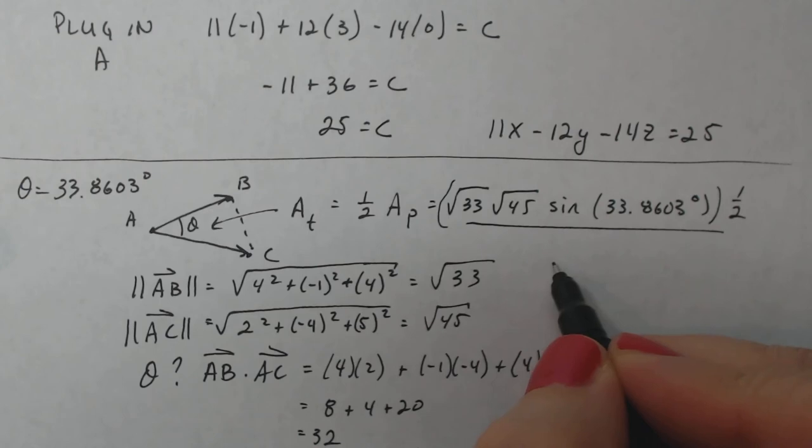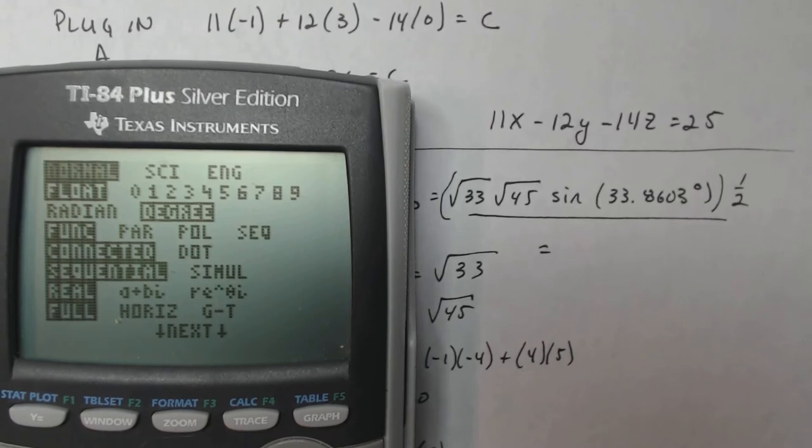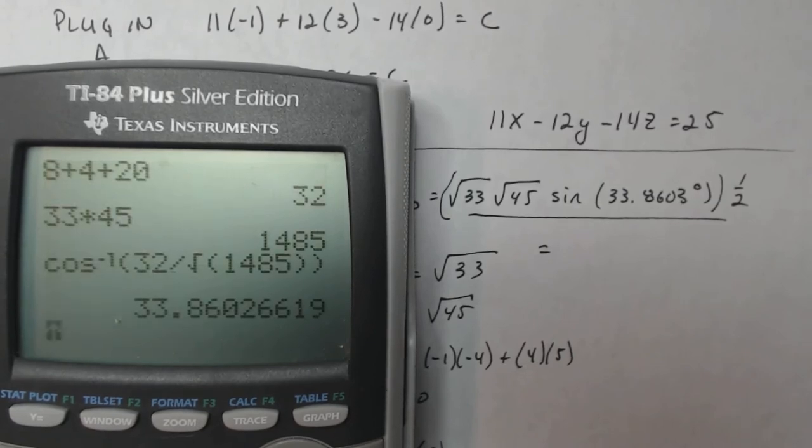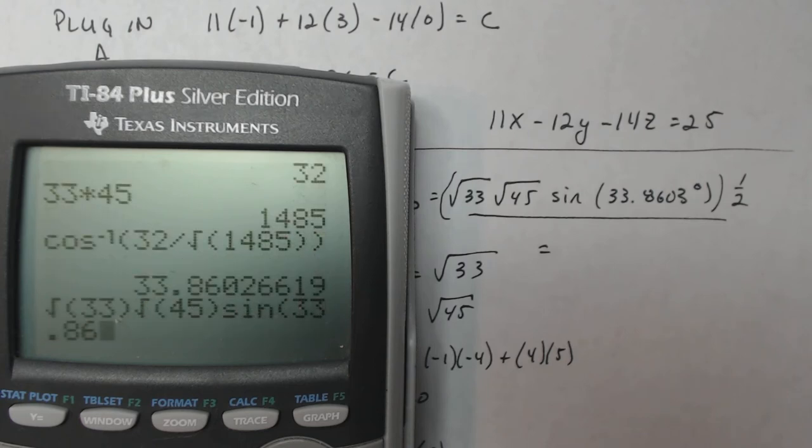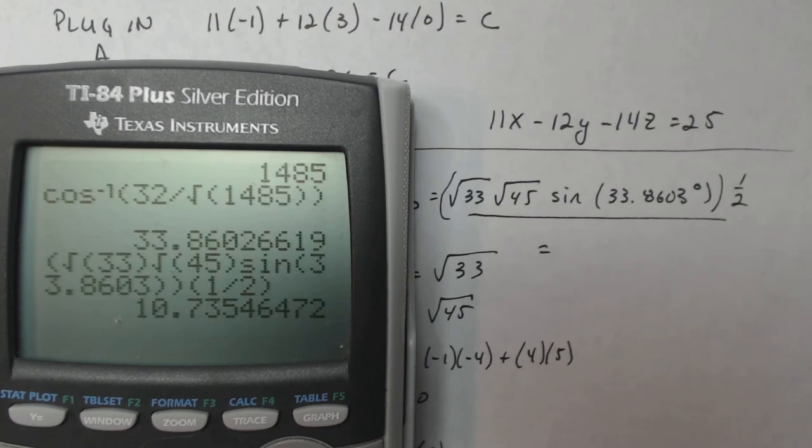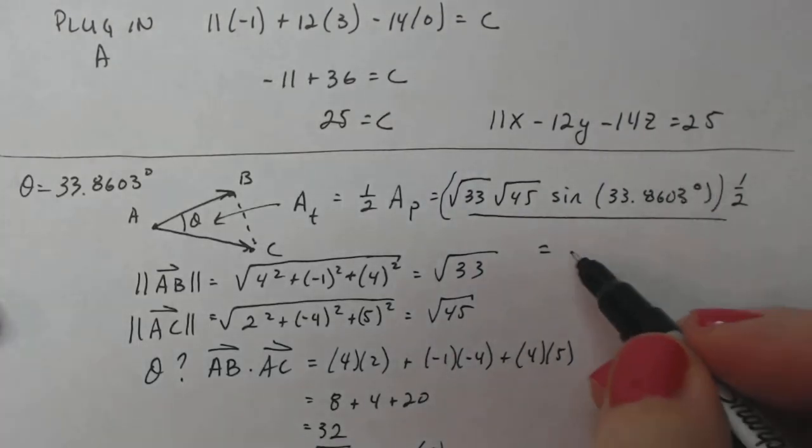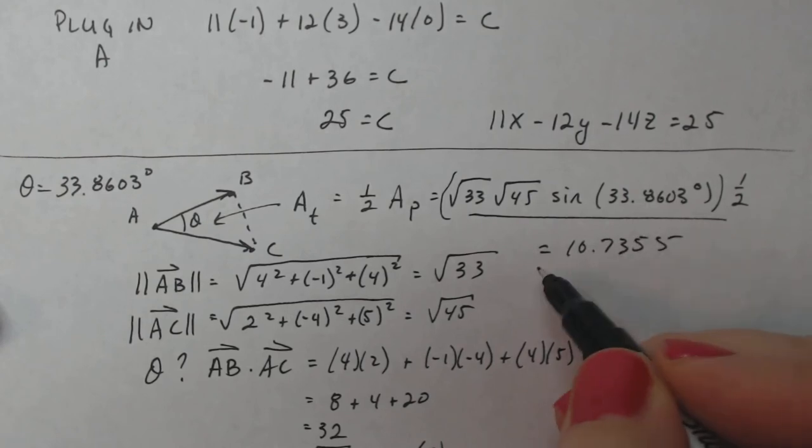So let's just do this number and round it to four decimal places. So square root of 33, square root of 45, sine of 33.8603, the whole thing times one half. So I get 10.7355.